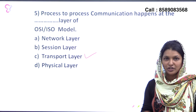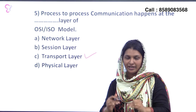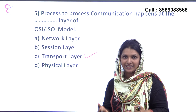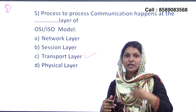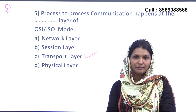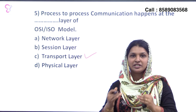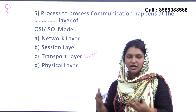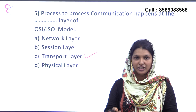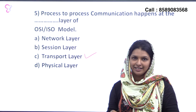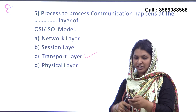The physical layer handles transmission functions — it is the first layer of the OSI model. The data link layer handles how data is formatted for sending and receiving. The network layer handles routing. The transport layer handles process-to-process communication using protocols like TCP or UDP. So the answer is the transport layer.